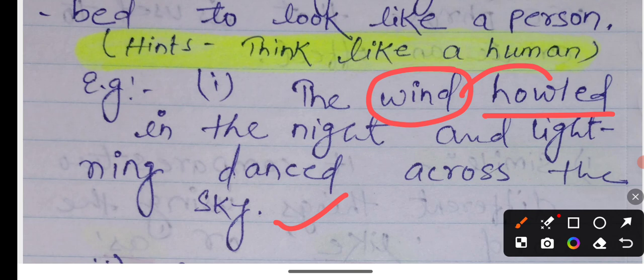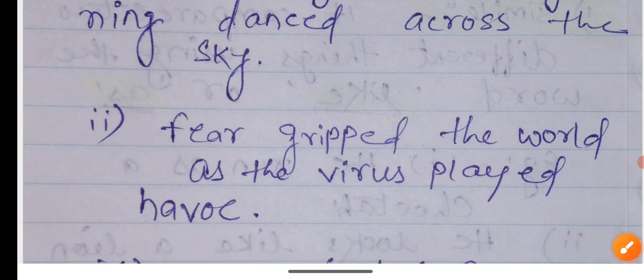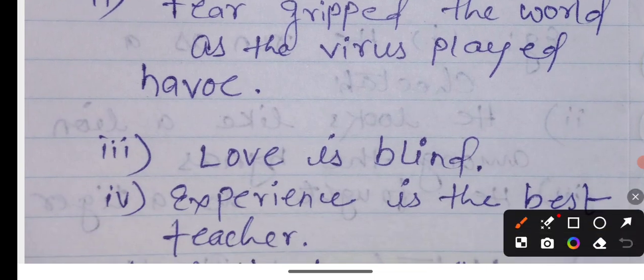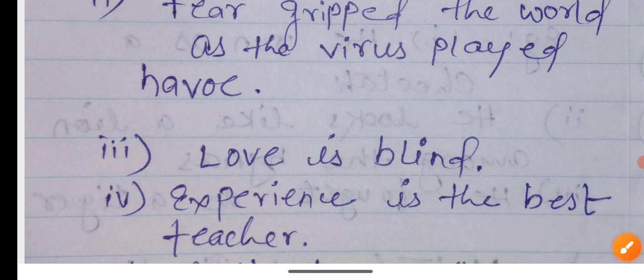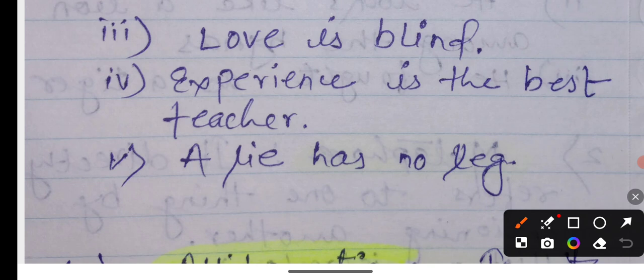So who can dance? Living things can dance. But we are comparing it with non-living things. Another example: a lie has knowledge. The path calls. The pair, which is a non-living thing, calls. So these types of words are personification.